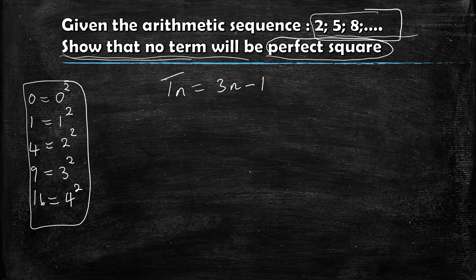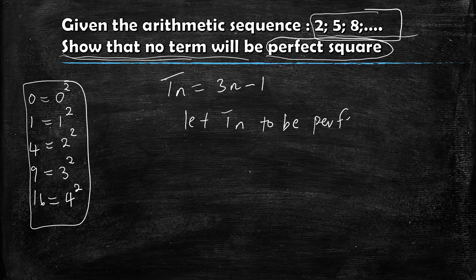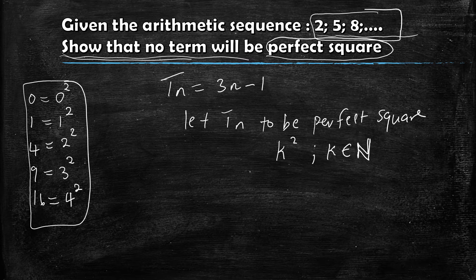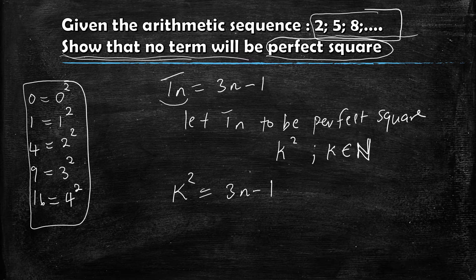After calculating Tn, we have to show that no term will be a perfect square. Using the strategic approach, I'll let my Tn be a perfect square — I'll call this perfect square k², where k is an element of the natural numbers. Since n must be a natural number in a sequence, we'll say k ∈ ℕ. So I replace Tn with k²: k² = 3n − 1.